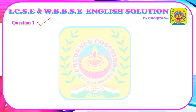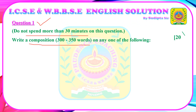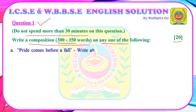Question 1. Do not spend more than 30 minutes on this question. Write a composition of about 300 to 350 words on any one of the following topics. There are 5 topics, and for writing a single composition you will get 20 marks. You should maintain the word limit. If your essay crosses 400 to 410 words, it will attract the examiner's attention and marks may be deducted. So try to maintain the given word limit.